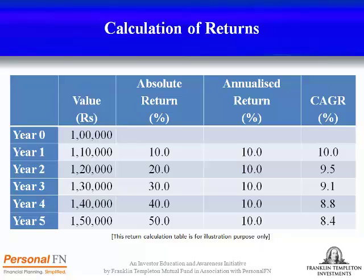The table shows the return calculation on an investment amount of Rs. 1 lakh over a period of five years. We can see that absolute returns keep increasing with an increase in value, and even if the annualized returns for all years are the same at 10 percent, the CAGR reduces gradually. So different methods of return calculation can project different returns. Before committing to any investment option showing high returns, you need to check whether the returns are calculated in absolute terms, annualized, or as CAGR. You should always compare returns by applying the same method of calculation.